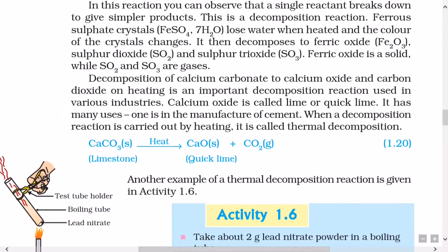Decomposition of calcium carbonate to calcium oxide and carbon dioxide on heating is an important decomposition reaction used in various industries. Calcium oxide is called lime or quicklime and has many uses, one being in the manufacture of cement. When a decomposition reaction is carried out by heating, it is called thermal decomposition. The reaction is: CaCO3 (solid, limestone) when heated gives rise to CaO (solid, quicklime) plus CO2 (gaseous).